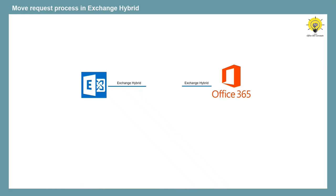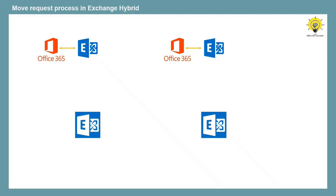An Exchange Hybrid deployment is performed between on-premise Exchange Server and Exchange Online. The tool used to deploy Exchange Hybrid is called Hybrid Configuration Wizard. In Exchange Hybrid deployment, you can perform two types of migrations: on-board migration, also called onboarding, and off-board migration, also called off-boarding. Onboarding is when you migrate an on-premise mailbox to Exchange Online, and off-boarding is when you move an already migrated mailbox back to on-premise.